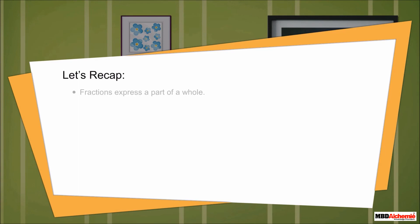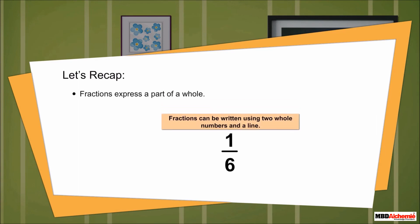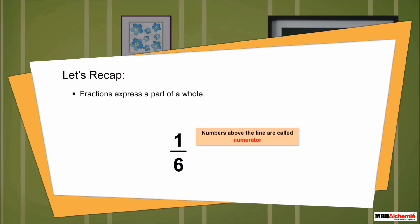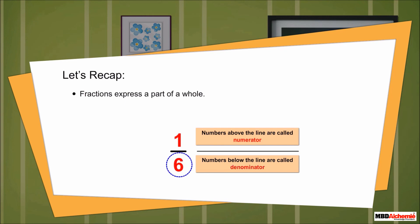Let's recap. Fractions express a part of a whole. Fractions can be written using two whole numbers and a line. Numbers above the line are called the numerator. Numbers below the line are called the denominator. The denominator tells us the total number of parts in a whole. The numerator tells us how many parts are taken from the whole.